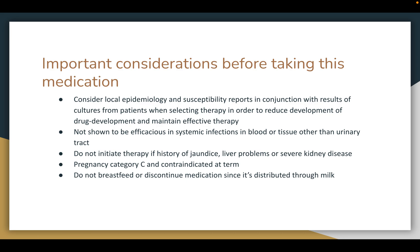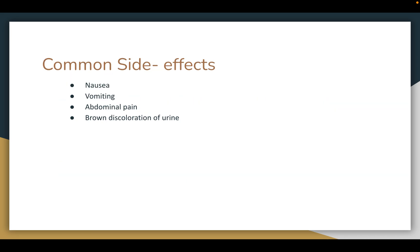Do not initiate therapy if there is a history of jaundice, liver problems, or severe kidney disease. Pregnancy category C and is contraindicated at term. Do not breastfeed or discontinue this medication since it is distributed through milk. Common side effects include nausea, vomiting, abdominal pain, and brown discoloration of the urine.